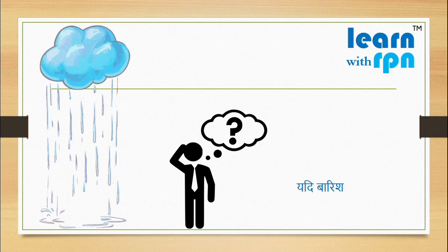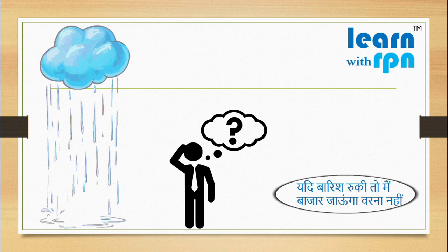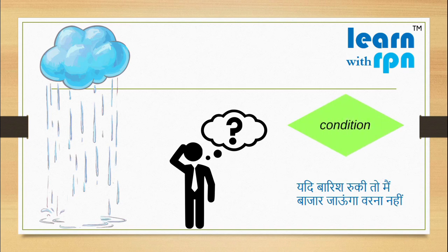यदि बारिश रुकी तो मैं बाजार जाऊंगा वरना नहीं. दोस्तों, इस sentence को ध्यान से देखिये. You'll see a condition here. अगर बारिश रुकती है, तो ये बाजार जाएगा. और अगर बारिश नहीं रुकती, तो ये बाजार नहीं जाएगा.